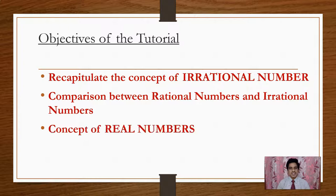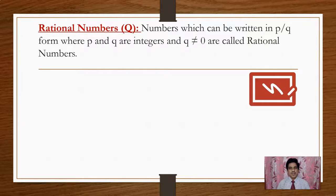Before going to the concept of Irrational Numbers, let us recall what we have learnt about Rational Numbers. Numbers which can be written in P by Q form, where P and Q are integers and Q not equal to 0, are called Rational Numbers.